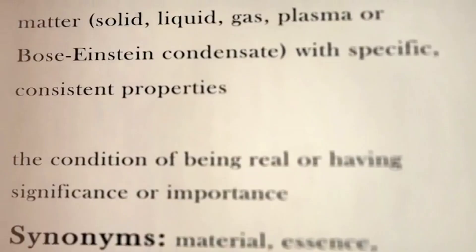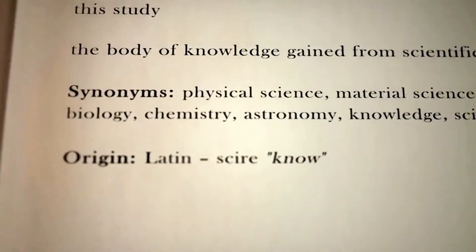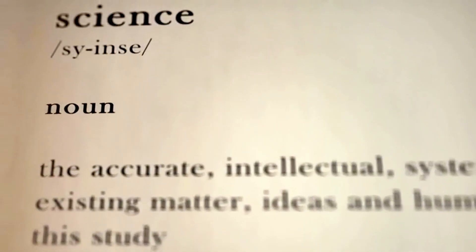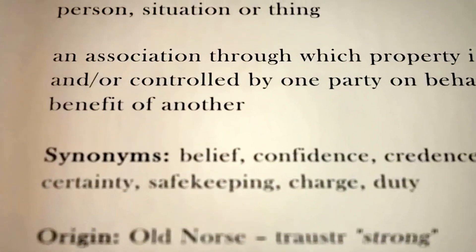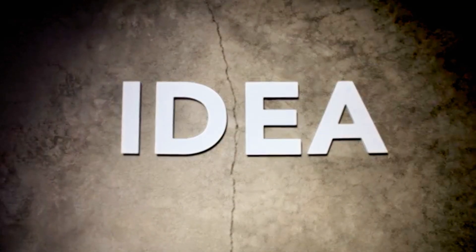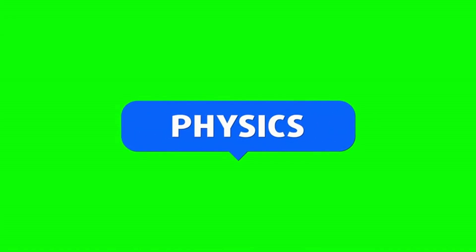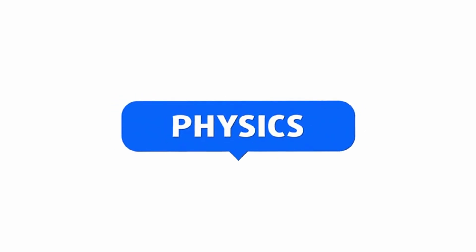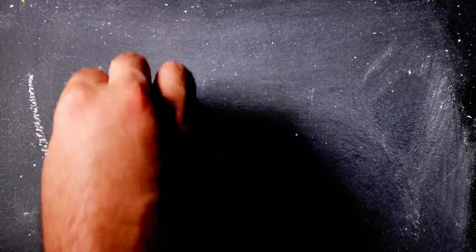What if time and space are not fixed, but relative? This question led to the first part of his work, the Special Theory of Relativity, published in 1905. The core idea: the laws of physics are the same for everyone, no matter how fast they are moving, as long as they're not accelerating. And the speed of light — 186,000 miles per second — remains constant, no matter what.